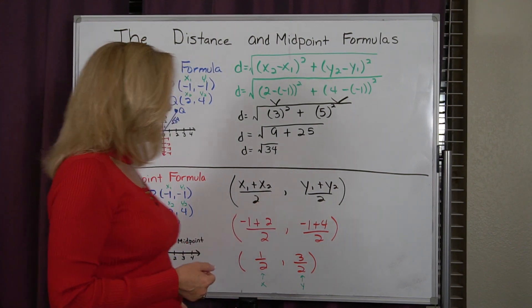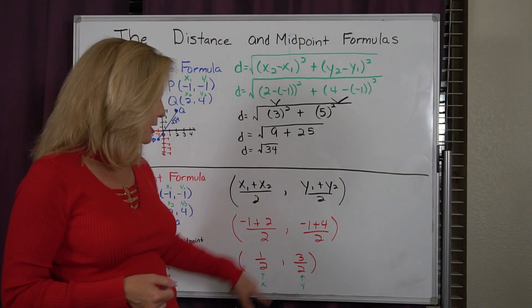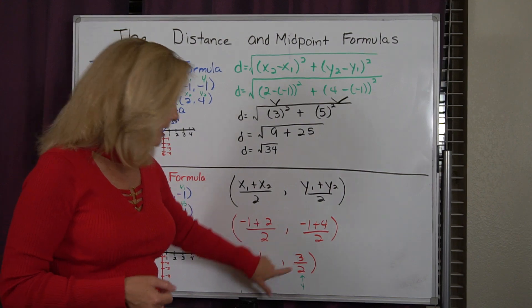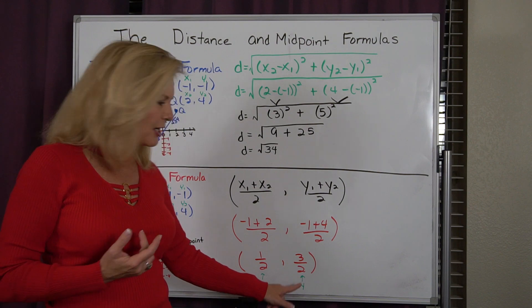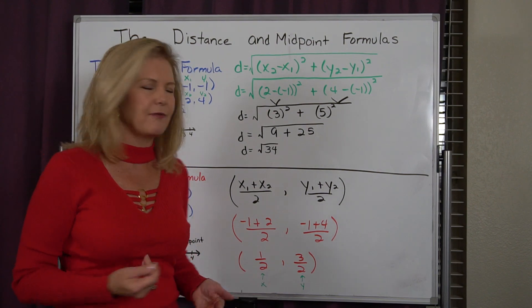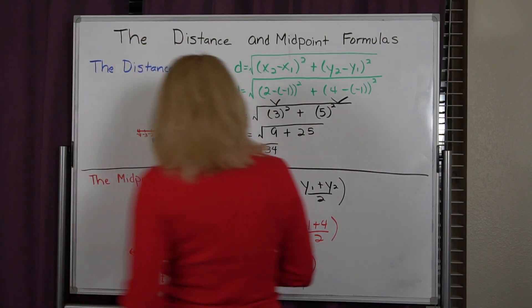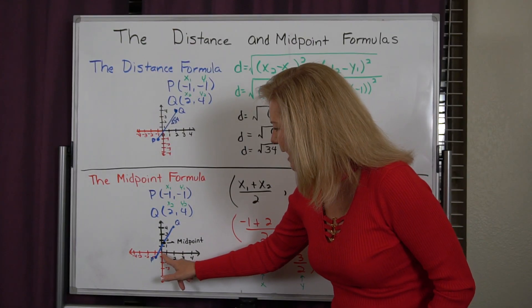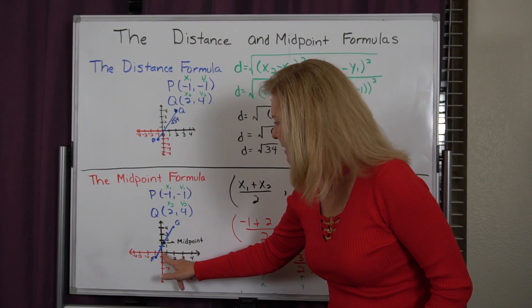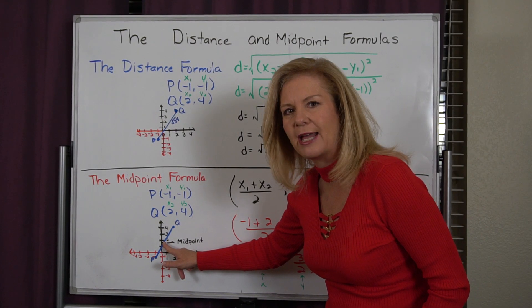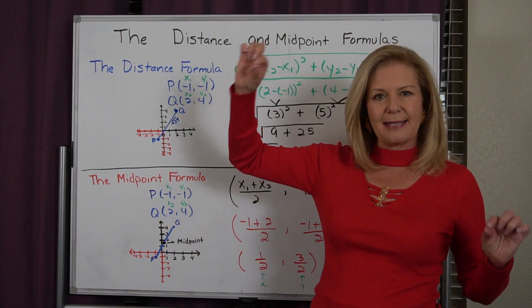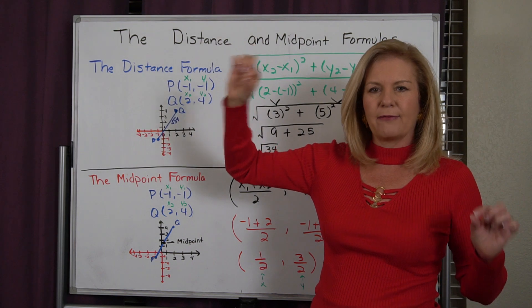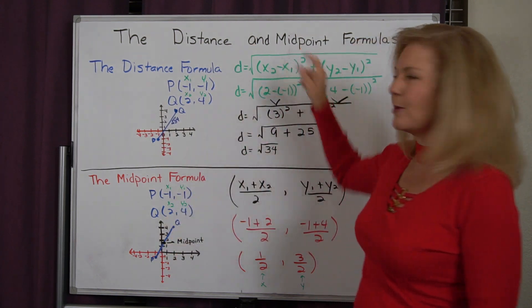So then I'm going to do my y value. So I'm going to do -1 plus 4, which is 3. And I'm going to cut it in half. And again, I can leave it as that fraction. I know that's the same as 1 and 1/2. So when I go to plot my points, I'm going to go to 1/2 as my x. I'm going to go to 1 and 1/2 as my y. I put my mark there. That would be the exact center point of that line. That would be my midpoint.